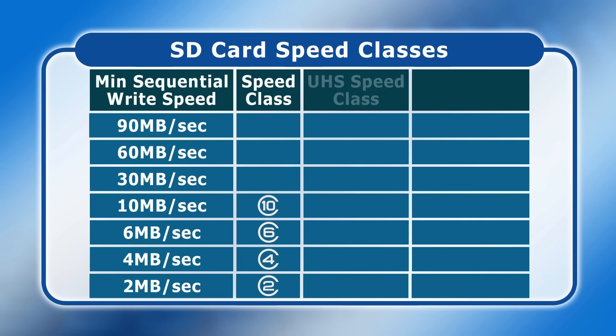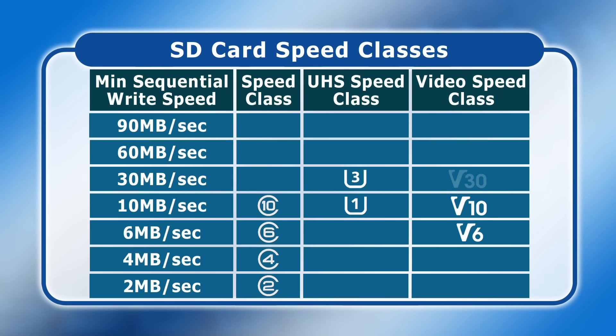Next came the UHS, or Ultra High Speed speed class, which indicates if a card can sustain either a 10 or 30 megabytes a second sequential write speed, by placing a number 1 or 3 inside a letter U. Next we have video speed class, with the figure 6, 10, 30, 60, or 90 appearing after a letter V, indicating a minimum sustained write speed of 6, 10, 30, 60, or 90 megabytes per second.